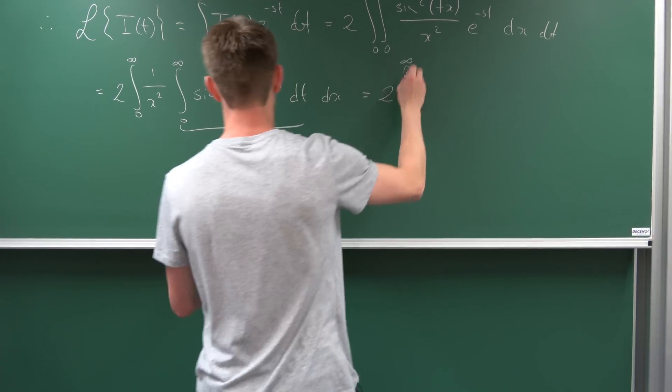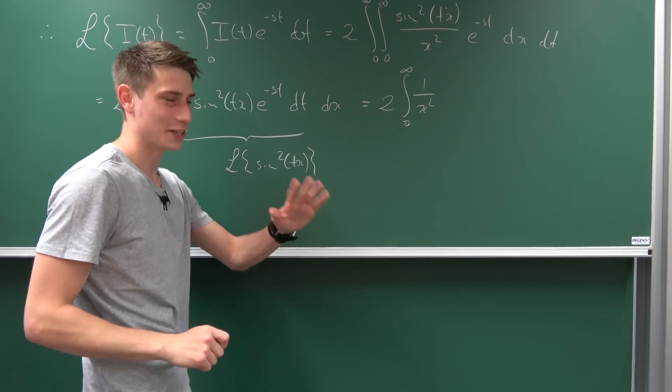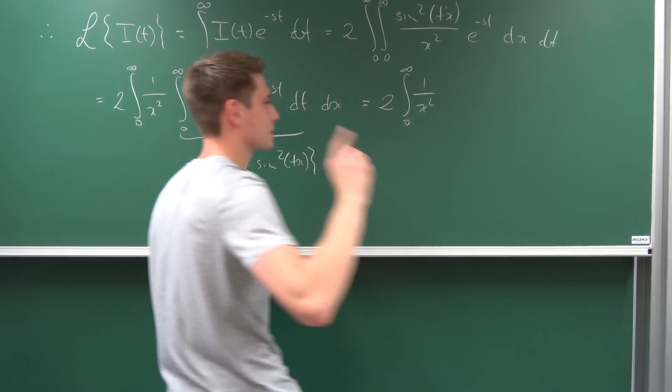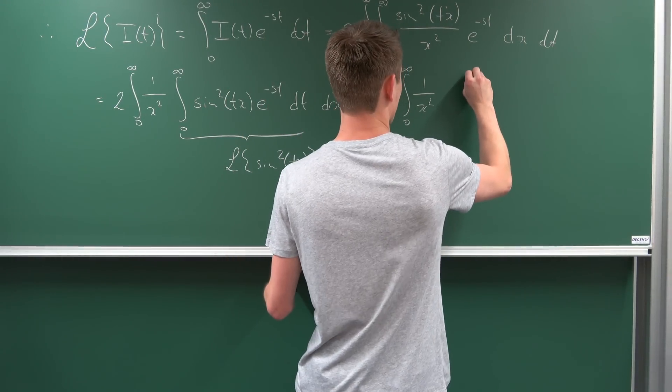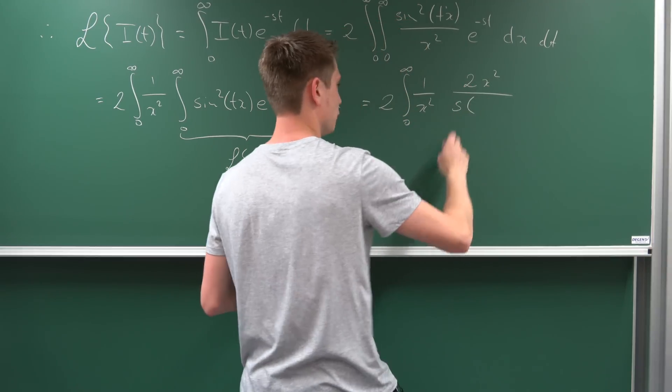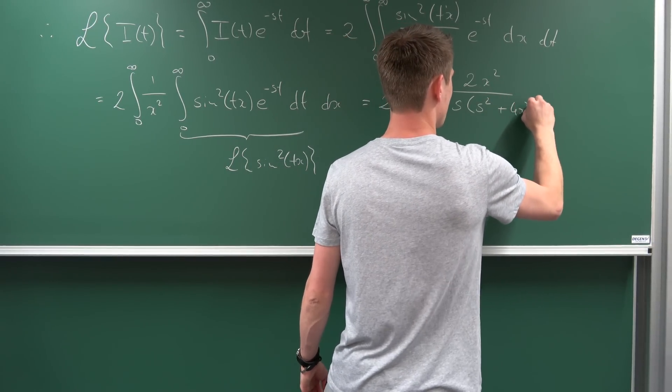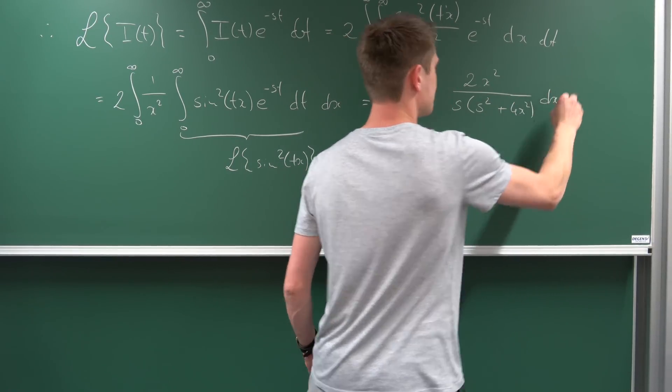We have 2 times the integral from 0 to infinity of 1/x² and now let's do it right: the Laplace transform of sin²(tx) is 2x²/[s(s² + 4x²)] - that's what I forgot last time - dx.